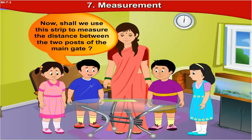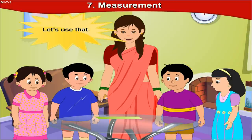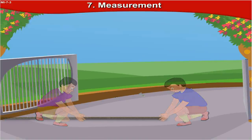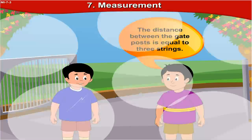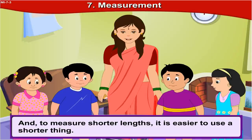Shall we use this strip to measure the distance between the two posts of the main gate? No, this strip is too short. I have a long string — let's use that. Let's use the string to measure the distance between the gate posts. We can see that the distance between the gate posts is equal to 3 strings. It's easier to measure a great distance using something of greater length, and to measure shorter lengths it is easier to use a shorter thing.